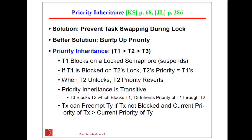A better solution is to actually bump up the priority of the task that has locked the semaphore. That means we need to bump up the priority of task two, because task one wants that shared resource. But during the lock period, if we bump up the priority to another task which uses that same resource during the period the resource is locked — that is the key here. Task two is only going to inherit the priority while it is locked.